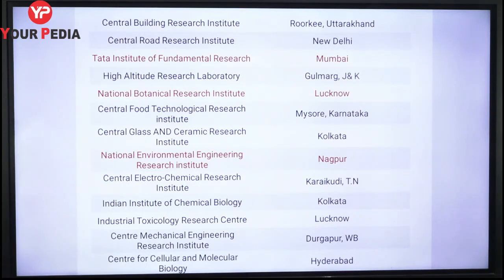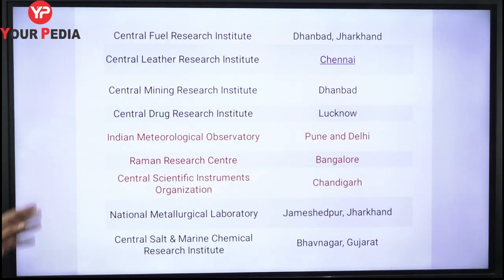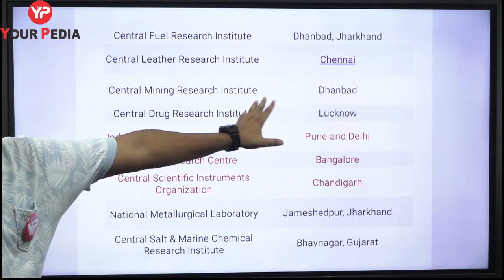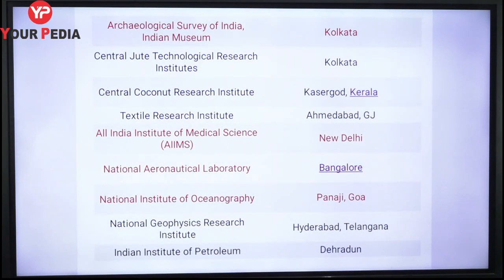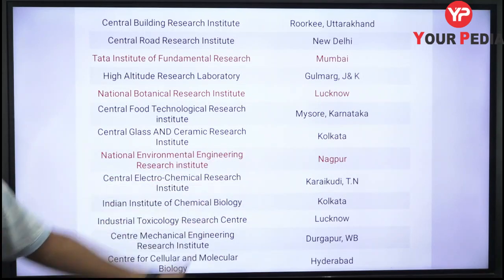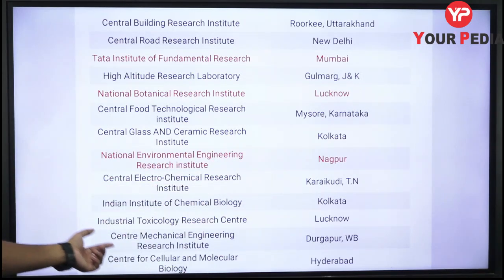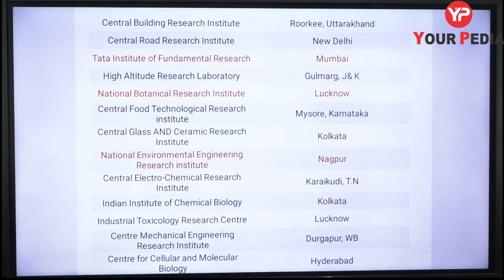There are many institutes like this. For example, if mining comes up, Dhanbad comes to mind — that is Jharkhand. If you have studied Geography carefully, you can relate the institute to its state. National Environmental Engineering Research Institute is in Nagpur. Center for Cellular and Molecular Biology is in Hyderabad. Central Mechanical Engineering Research Institute is in Durgapur, West Bengal. You need to remember the names and locations of these famous research centers, as direct questions can be asked from them.